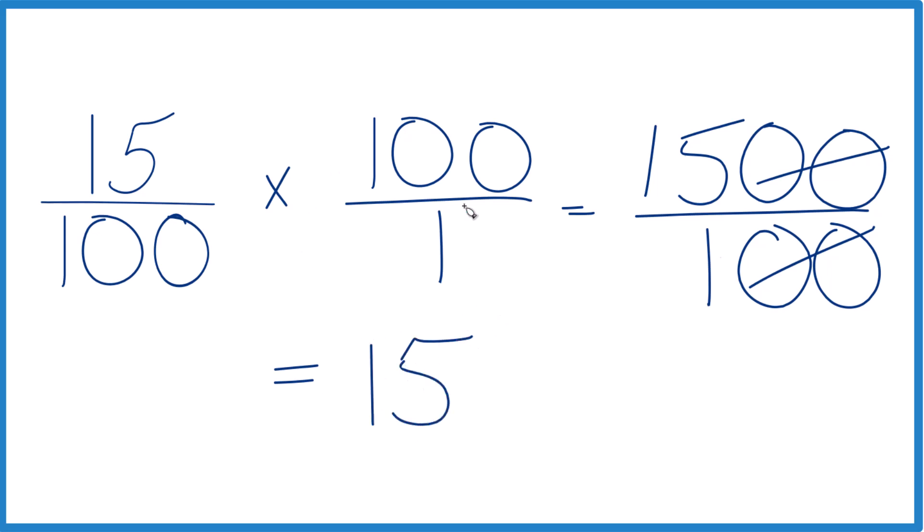So when you take 15% of 100, you're going to end up with 15. You could convert this to a decimal, divide 15 by 100, and then multiply by 100. You get 15, just like we did before.